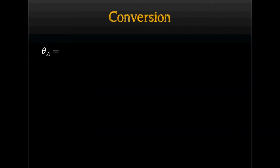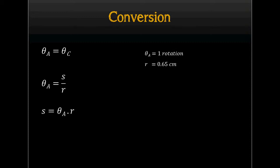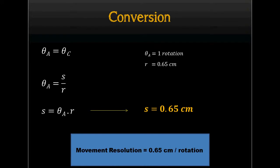Theta A is much equals to Theta C. Then we substitute Theta C with S divided by R, and we get S equals Theta A multiplied by R. Since A is the NXT motor, we define its value as 1 rotation. R is the radius of Gear C, and we get the value from the datasheet as 0.65 cm. Therefore, S equals 0.65 cm. The conclusion is our robot's movement resolution equals 0.65 cm per rotation.